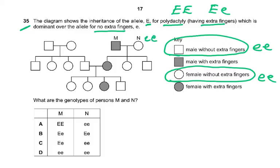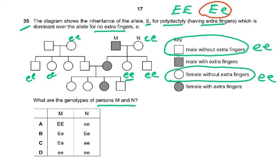The key clue is that all the people shown as clear squares or circles — circles signify females, squares signify males — are small e, small e. The question asks for the genotypes of persons M and N. If M and N have a child who is small e, small e, then M must be big E, small e — because one small e came from M and one small e came from the other parent.